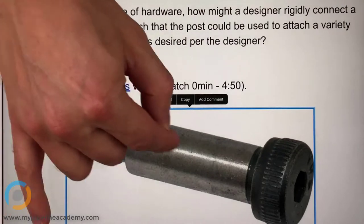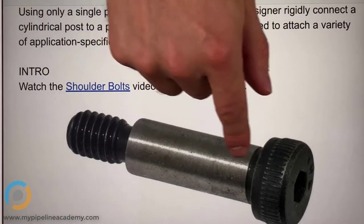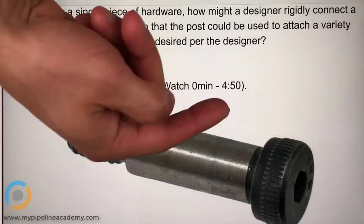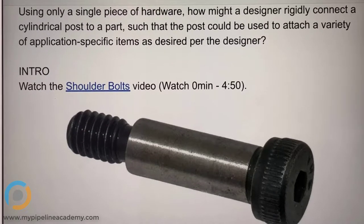Because a bolt would be threaded all of it. So what's the purpose of no thread here is my question. It's just a clean interface that you can hold on to. So something can maybe rotate on there?